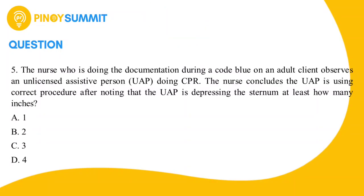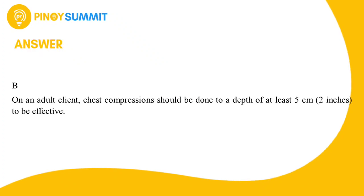To make it easier to find the correct answer, let us remove the two incorrect options, leaving only options B and D. If your answer is letter B, then you are correct. On an adult client, chest compressions should be done to a depth of at least five centimeters (two inches) to be effective.